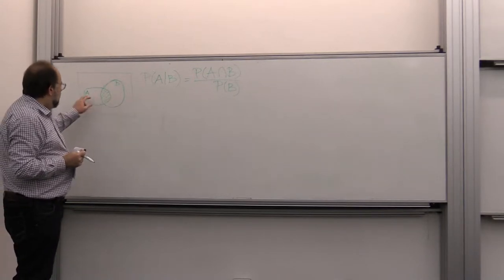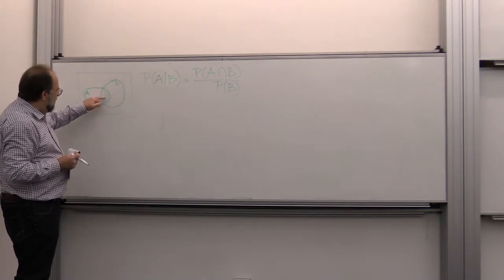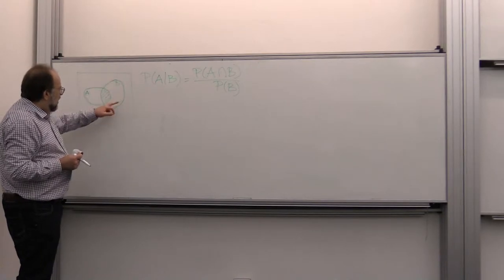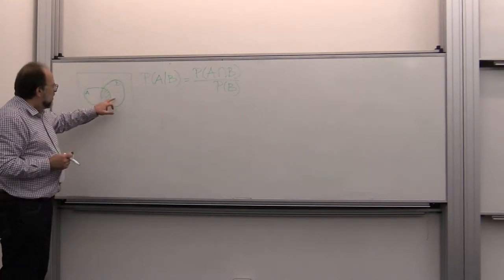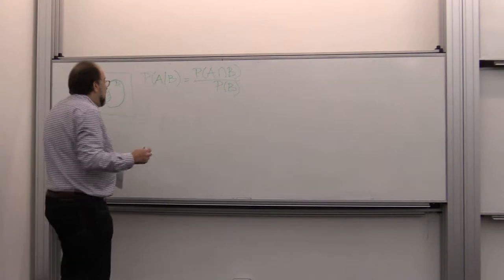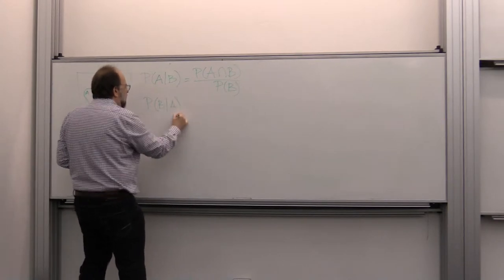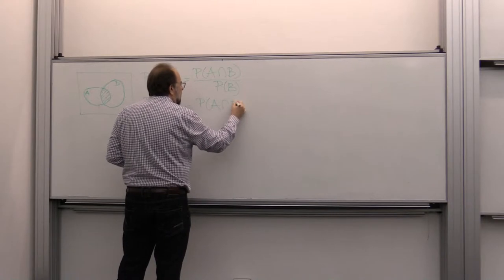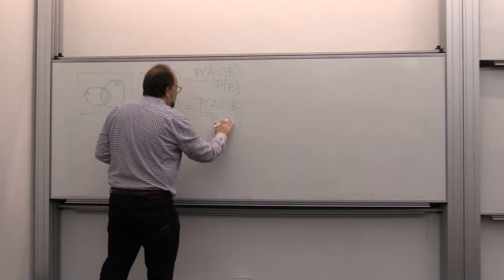Because if B happened, the only way A can happen is that the outcome lies in the intersection. So the probability that the outcome lies in the intersection will be the measure of this intersection, which is probability of A intersected B, divided by the measure that B happened at all. Similarly, the probability that B happened given that A has happened is equal to the probability of A intersected B, divided by the probability that A has happened.